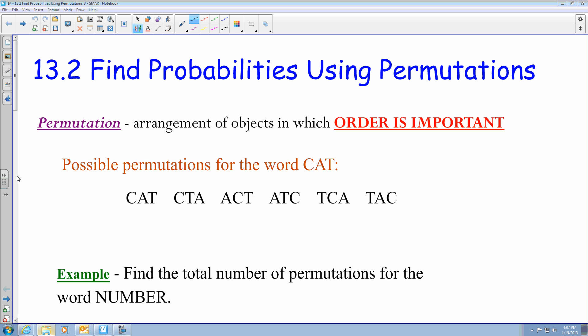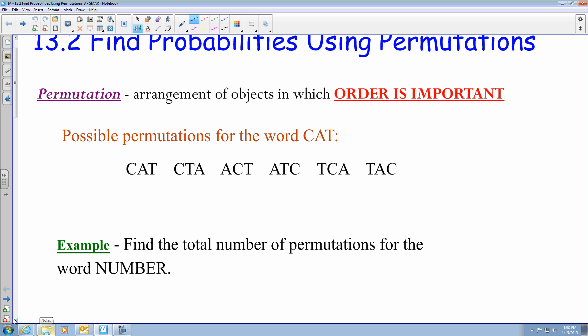Initially, doing something in a smaller set as three objects like C, A, T is fairly simple to write out all the data. But once you start getting more arrangement of objects, you get more ways that you can create possible permutations. For example, if you find the total number of permutations for the word NUMBER that has six objects in it, N-U-M-B-E-R.